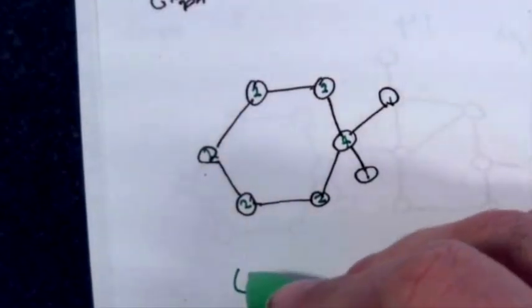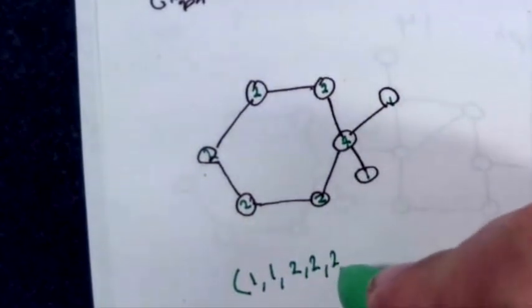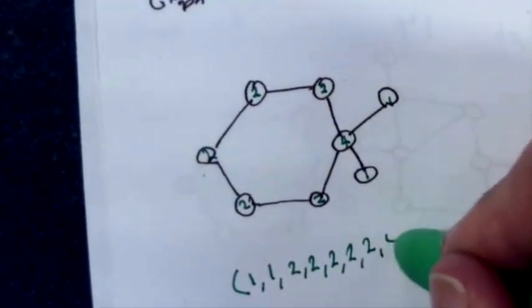1, 1, so the degree sequence here would be 1, 1, 2, 2, 2, 2, 2, 2, 4.